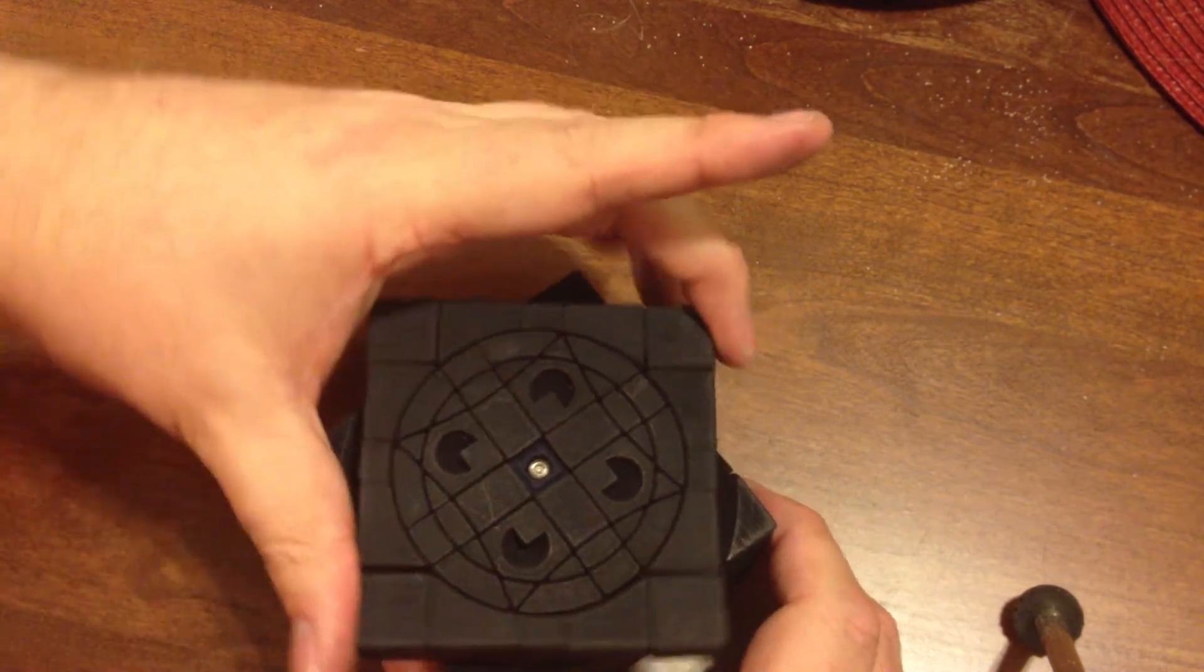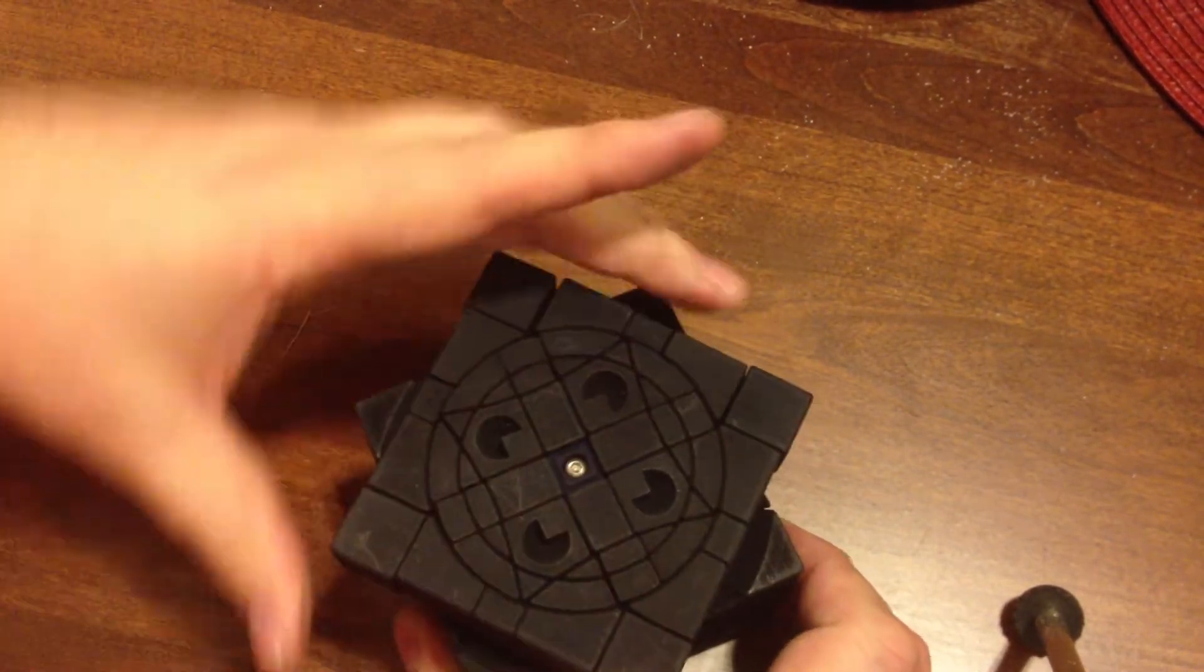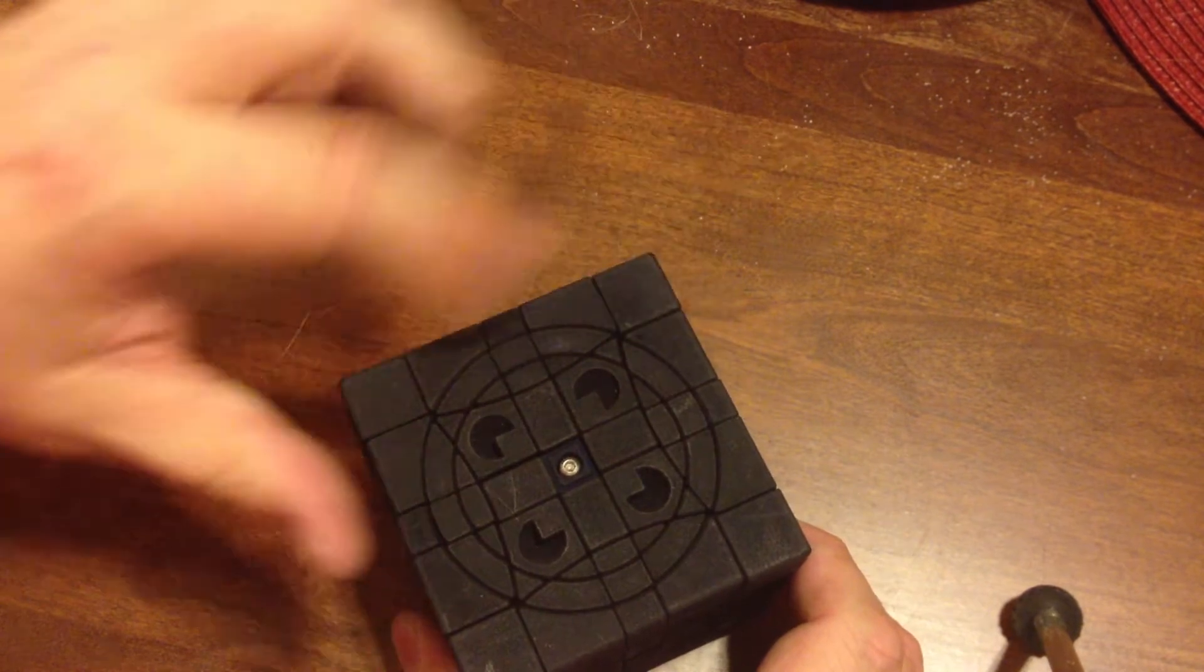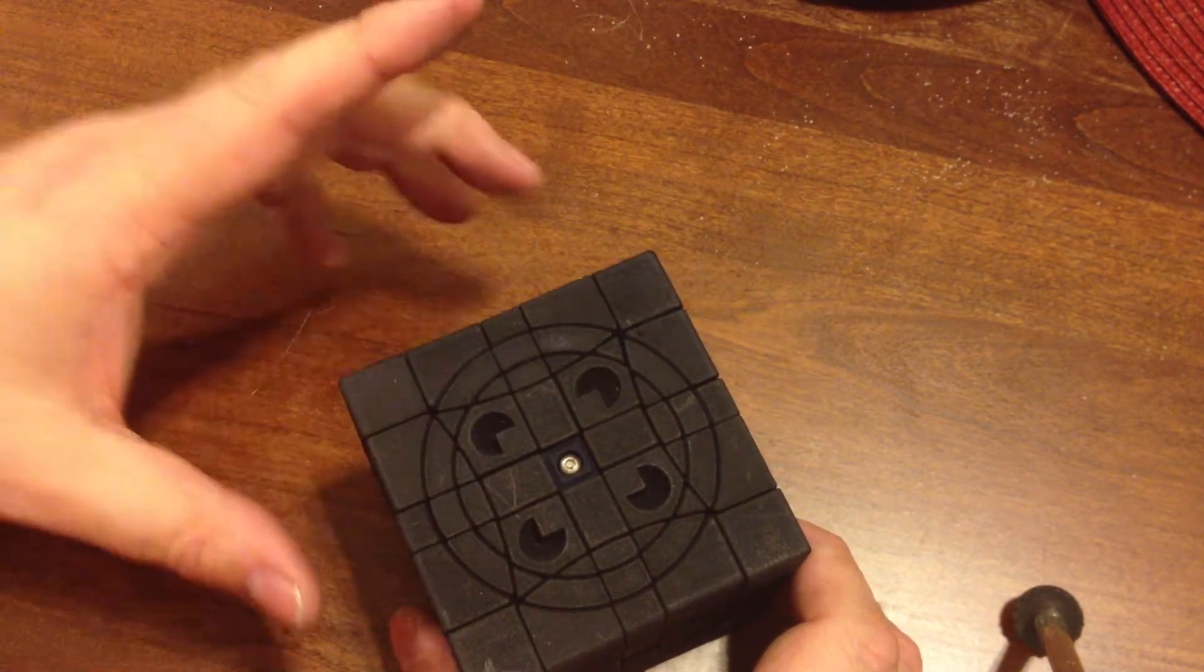You've seen how a 5x5 face turns in this puzzle, you can see the outer pieces are rotating. Nothing in the inner circles, either of the inner circles is turning.